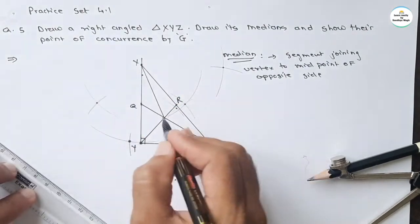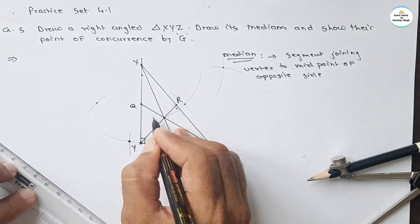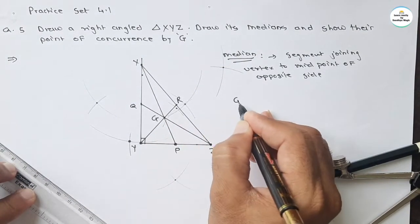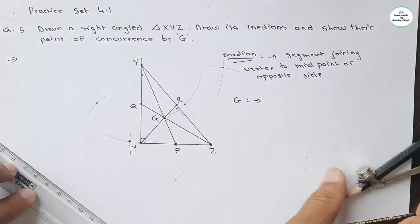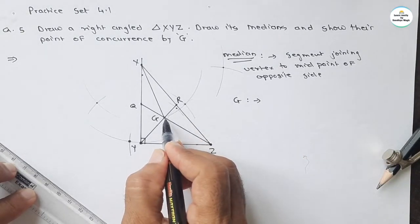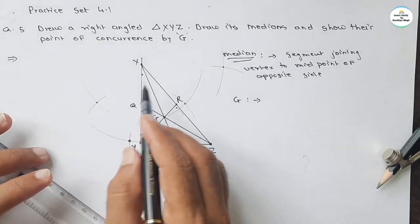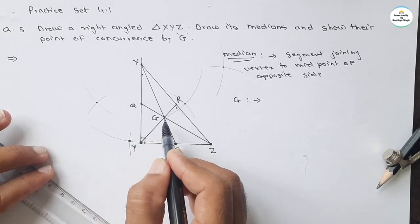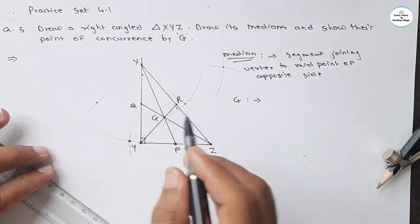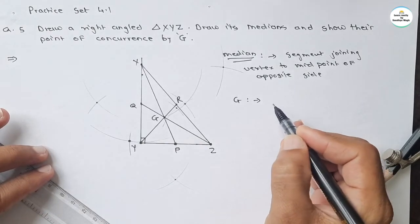All these three medians will meet in a single point, and that point is called the point of concurrence, denoted by G. This point G is the concurrence point of all medians. All three medians will meet at point G, and that G point is called the centroid.